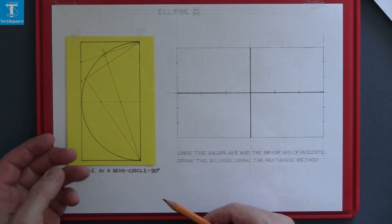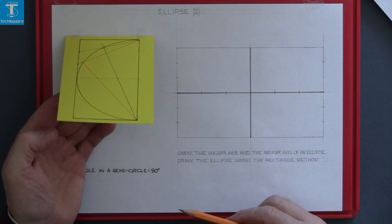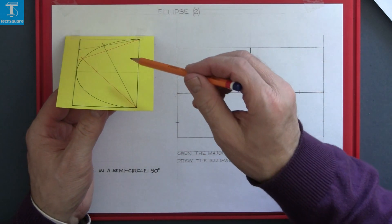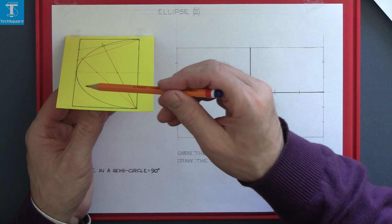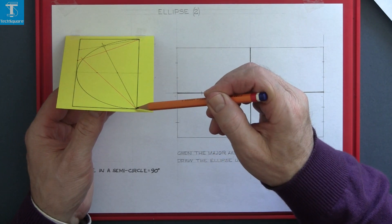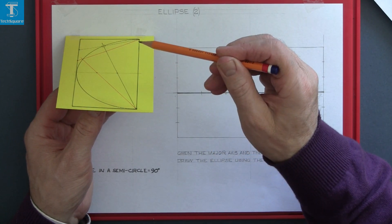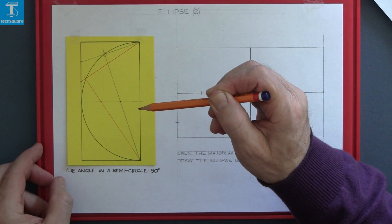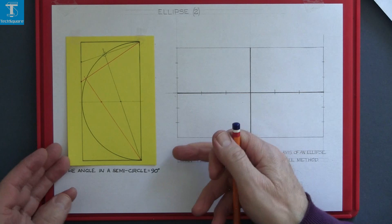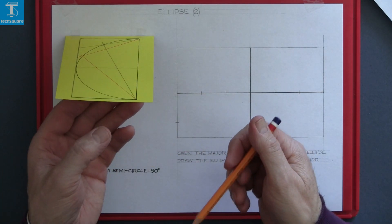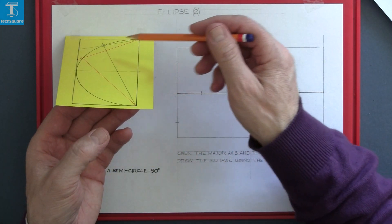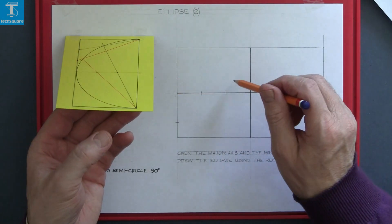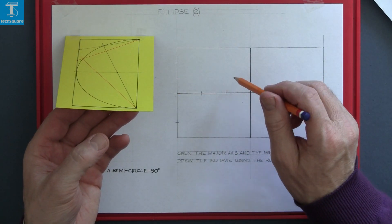If I tilt this up at an angle the circle becomes an ellipse. The distance from here to here has shortened. It was that length, it's shortened when we lift it up. And these lines here are the lines we're going to draw on this question over here.